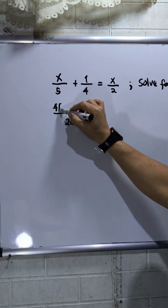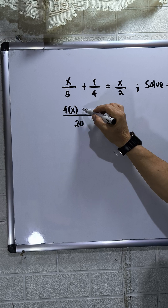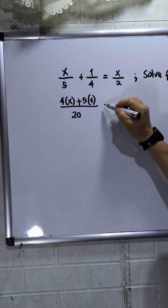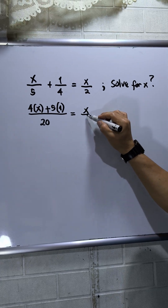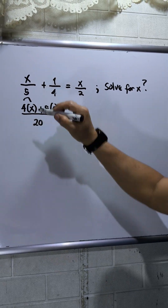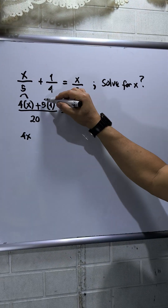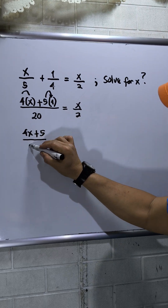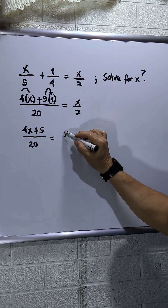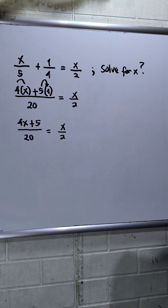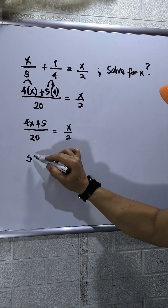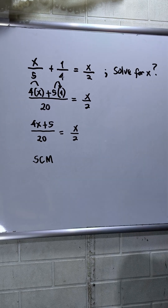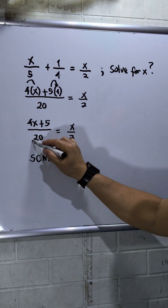is 4, times the numerator which is x. Then plus 20 divided by 4, that is 5 times the numerator 1, is equal to x over 2. This gives us 4x plus 5 is equal to 20 over... so I will apply a shortcut method.